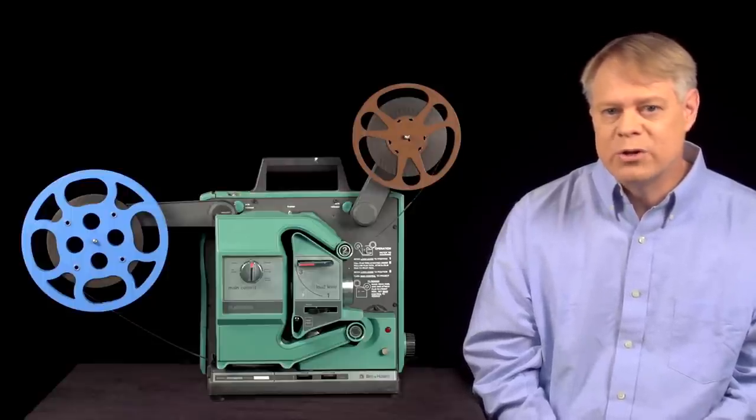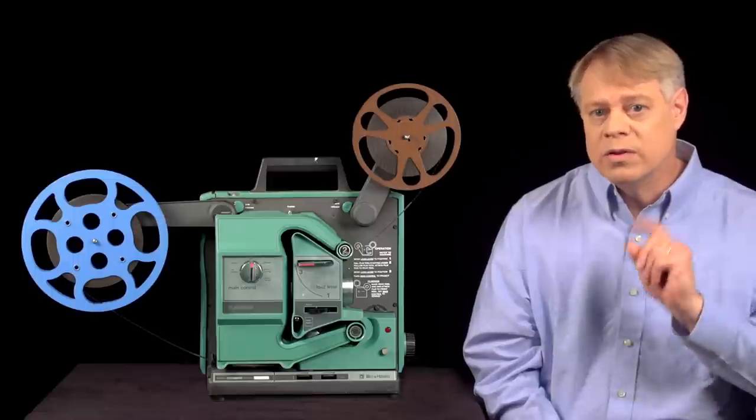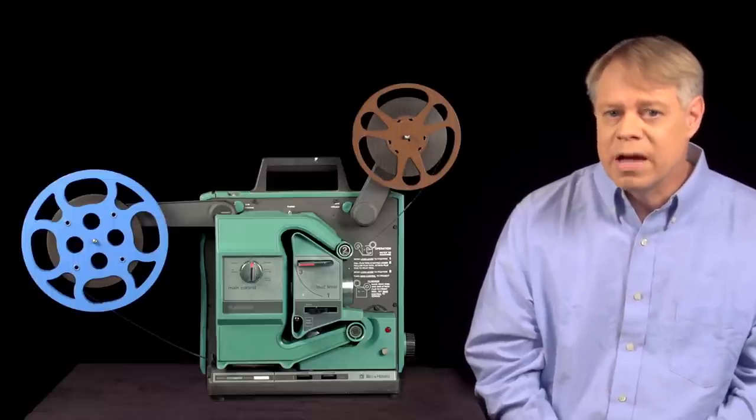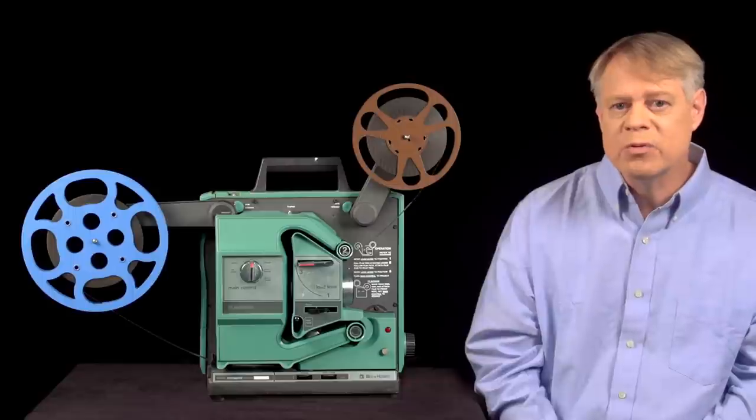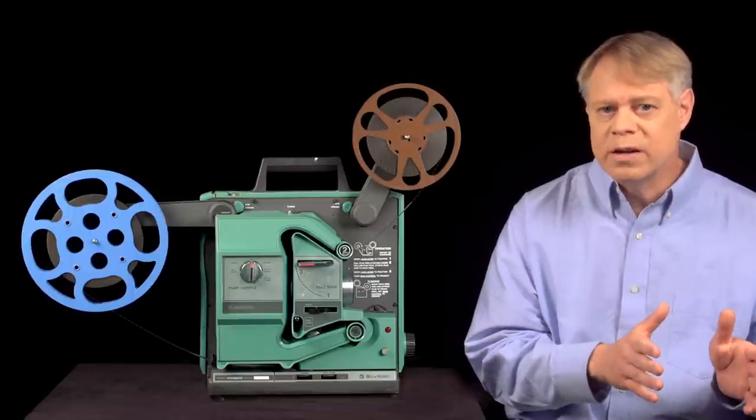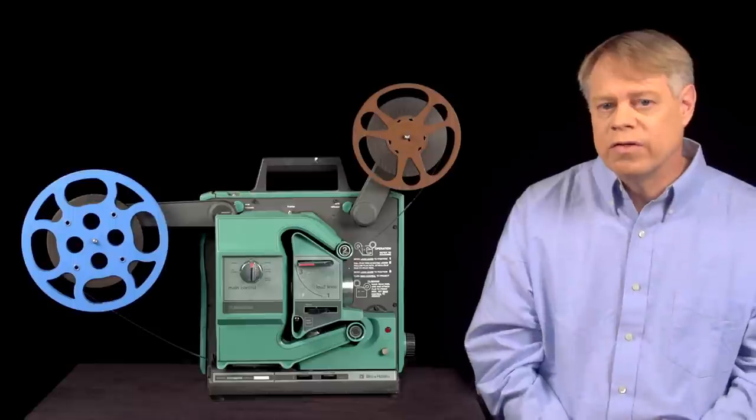A projector with a single-bladed shutter blocks light from the lamp once every frame. So half the time, every 24th of a second, the screen is dark. This switching between a bright projected image and darkness is called flicker.